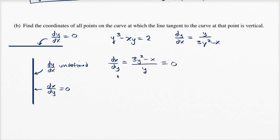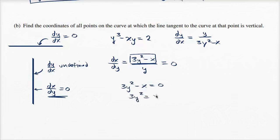If we want dx/dy to equal zero, that's only going to happen if the numerator is equal to zero. So we ask: at what (x, y) pair does 3y² − x = 0? Adding x to both sides gives 3y² = x. You could also think of it as: at what values does dy/dx become undefined? That happens when the denominator is zero — but I prefer thinking of it as dx/dy = 0, which gets us to the same conclusion.